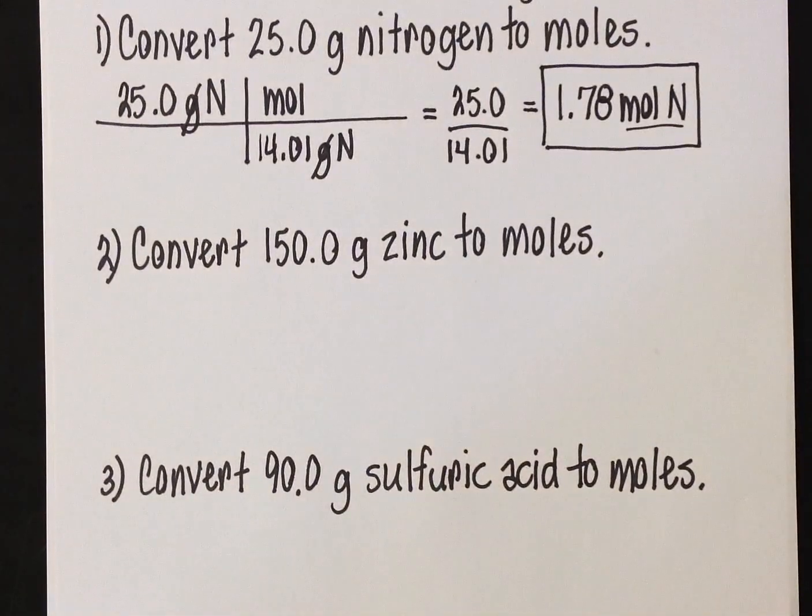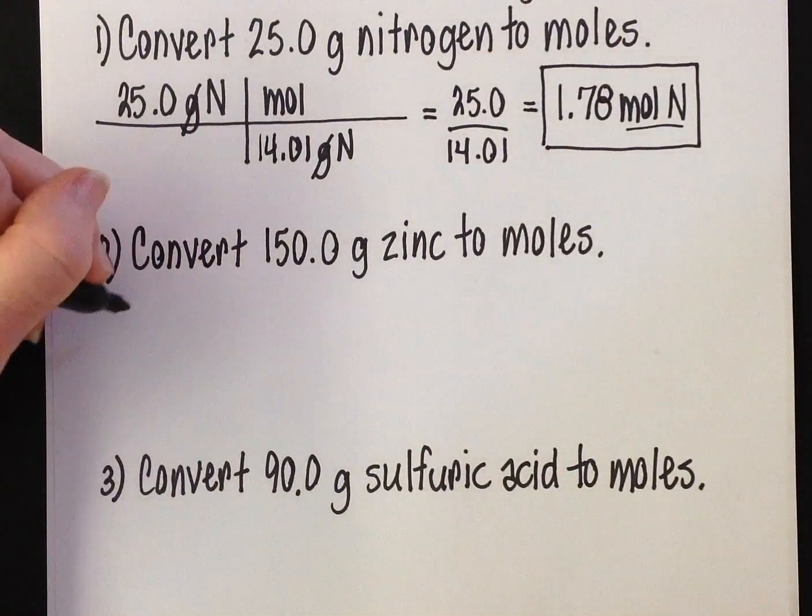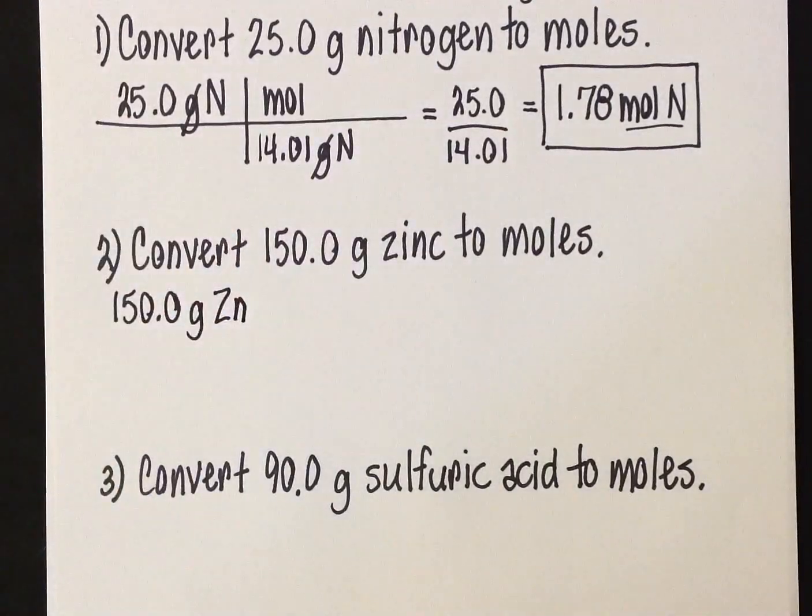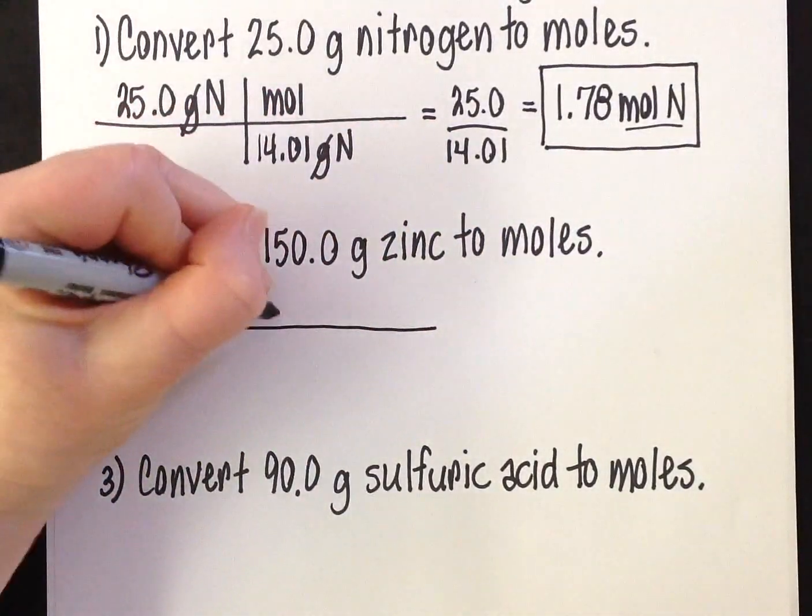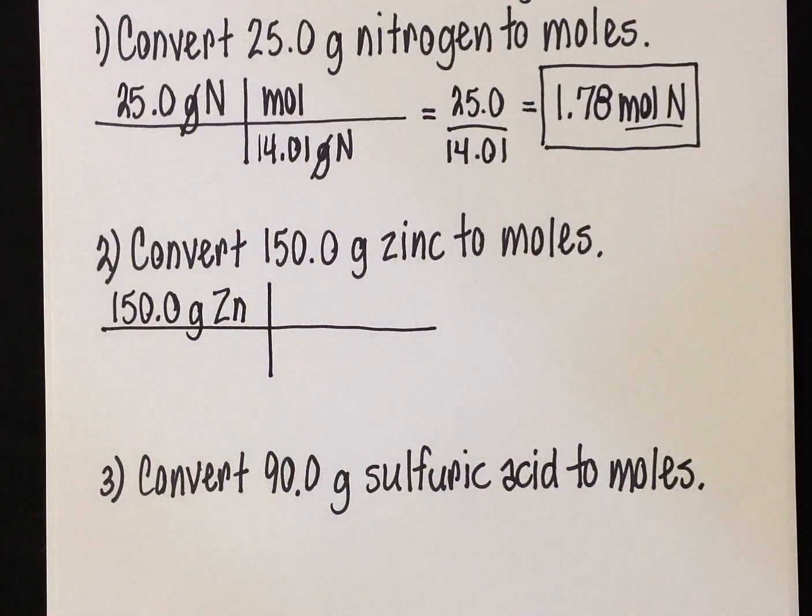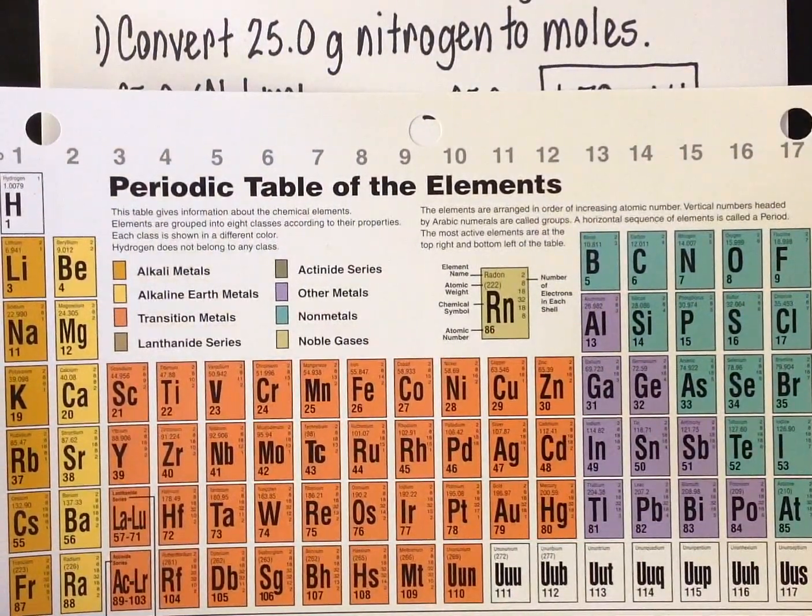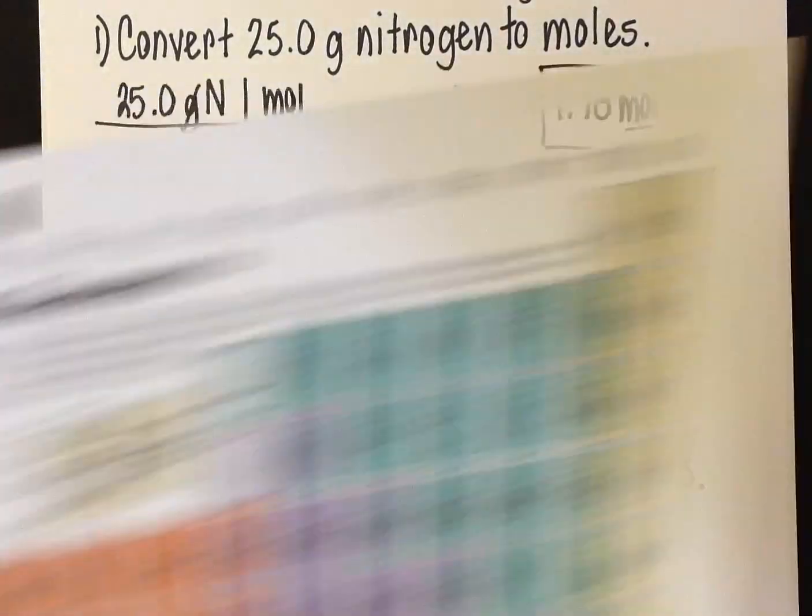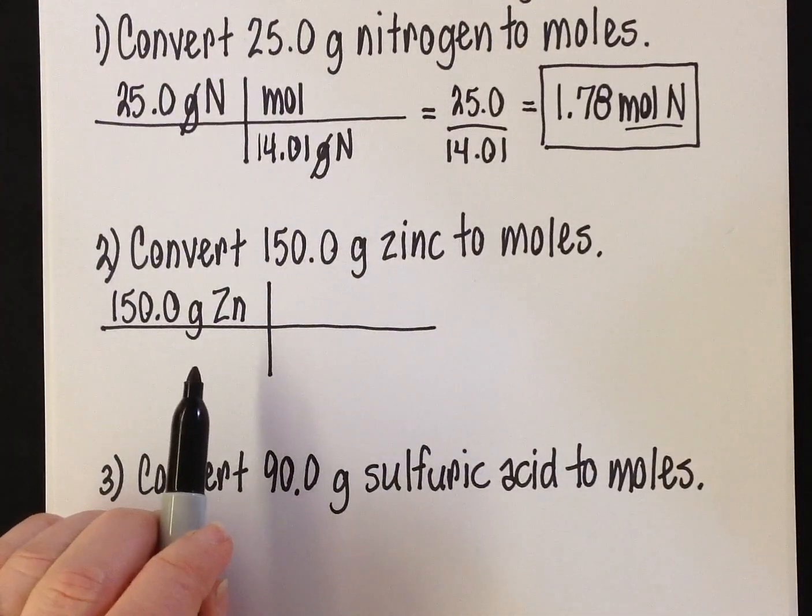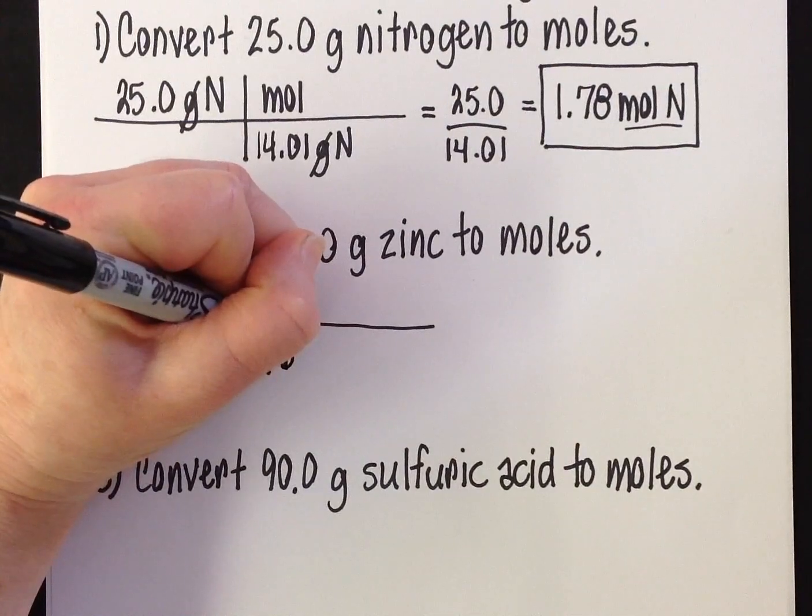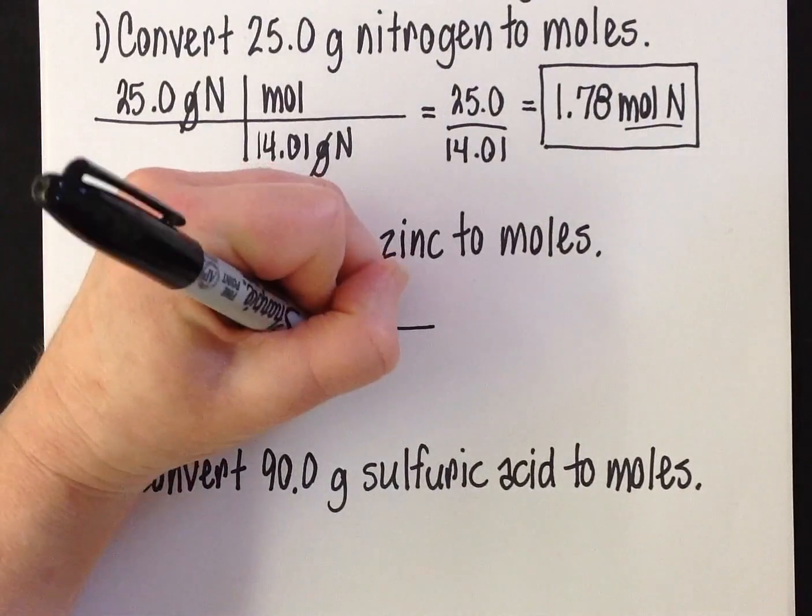On number two, we're converting 150 grams of zinc to moles. We write down the given: 150 grams of zinc, that symbol is Zn. Long line, short line. Now we ask ourselves, what kind of tool do I have in my toolbox, my chemistry toolbox, to get me from gram to mole for zinc? There is one number very specific for that, and that is again going to be your molar mass. If you look right here, the molar mass for zinc is 65.39 grams per mole. Because gram is on the top here, I know gram has to be on the bottom in the next step, so I'm going to write 65.39 grams of zinc per mole.